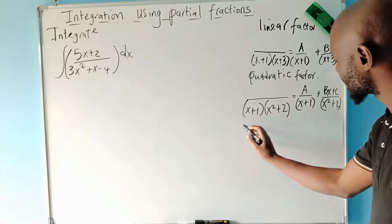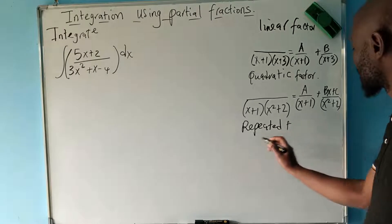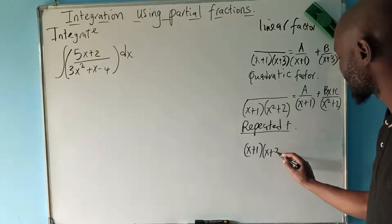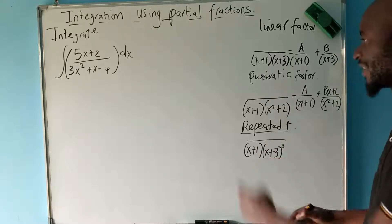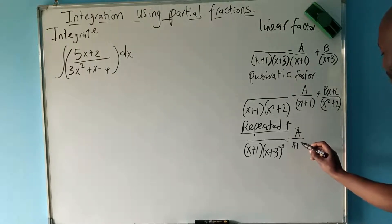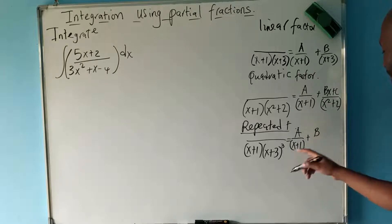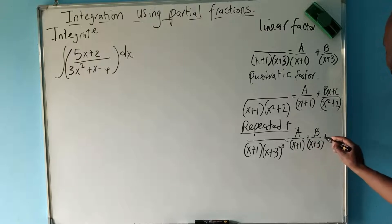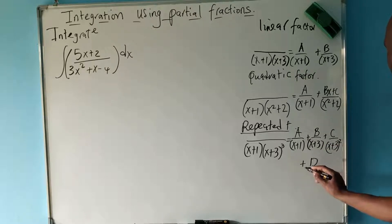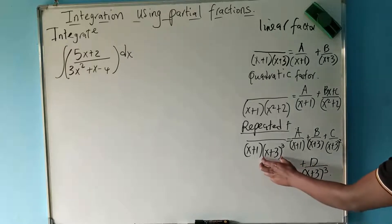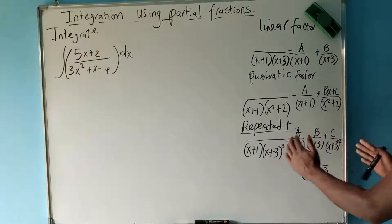Apart from this, we can have where the factors are repeated — repeated factors. So if what we have are repeated factors, we are going to have something like x plus three to the power three. If you try to decompose into partial fractions, you are going to have A over x plus one, plus B over x plus three, plus C over x plus three squared, plus D over x plus three cubed.